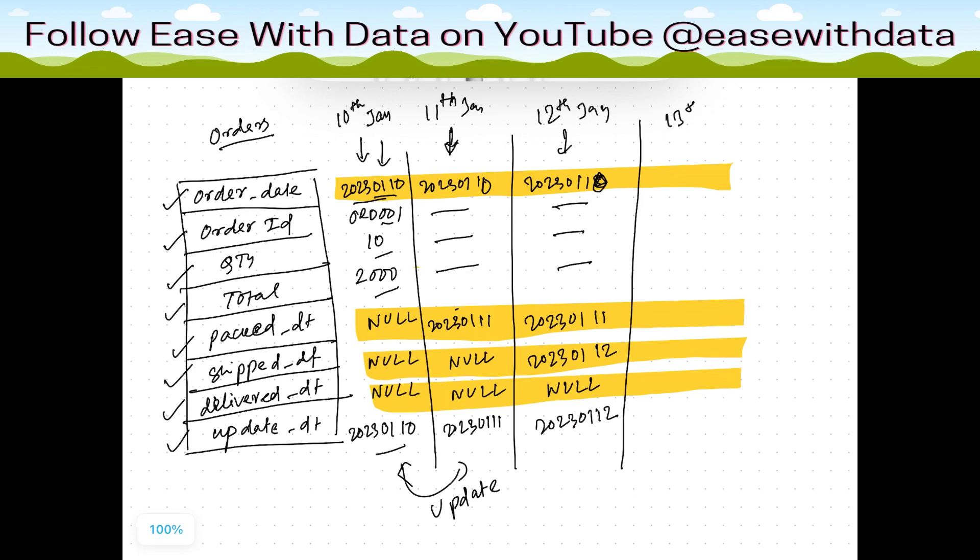Now on 13th Jan when the order gets delivered, it would be 2023-01-10. All three information will remain same. This would be 2023-01-13. This would be 2023-01-13.